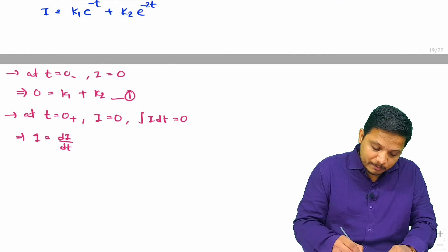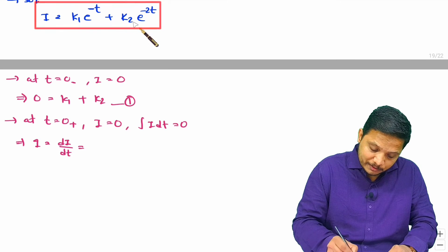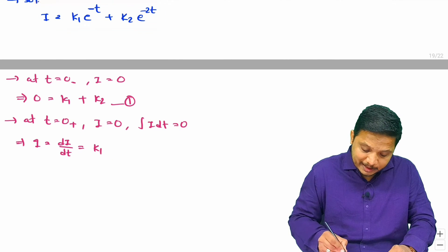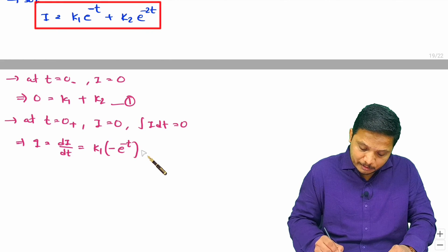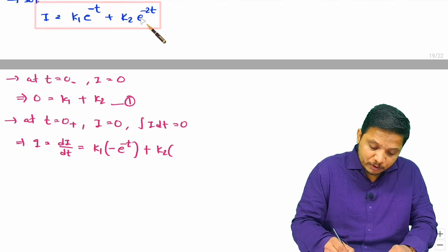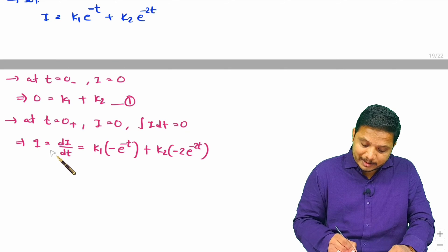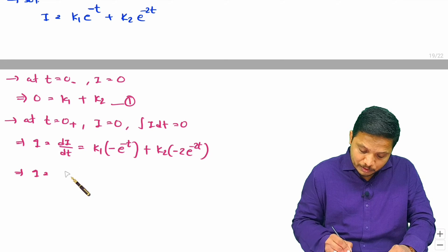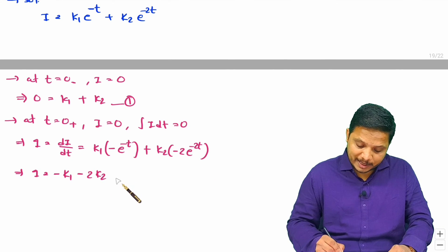From the general solution, differentiating with respect to time gives di/dt = −k1·e^(−t) − 2k2·e^(−2t). Now placing t equals zero: 1 = −k1·e^0 − 2k2·e^0, which simplifies to −k1 − 2k2 = 1. This is our second equation.